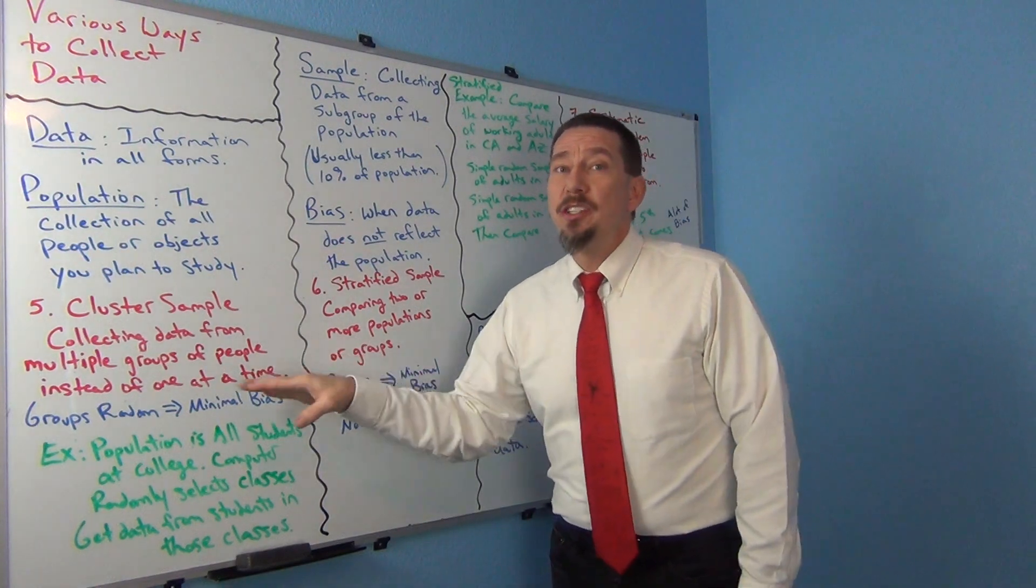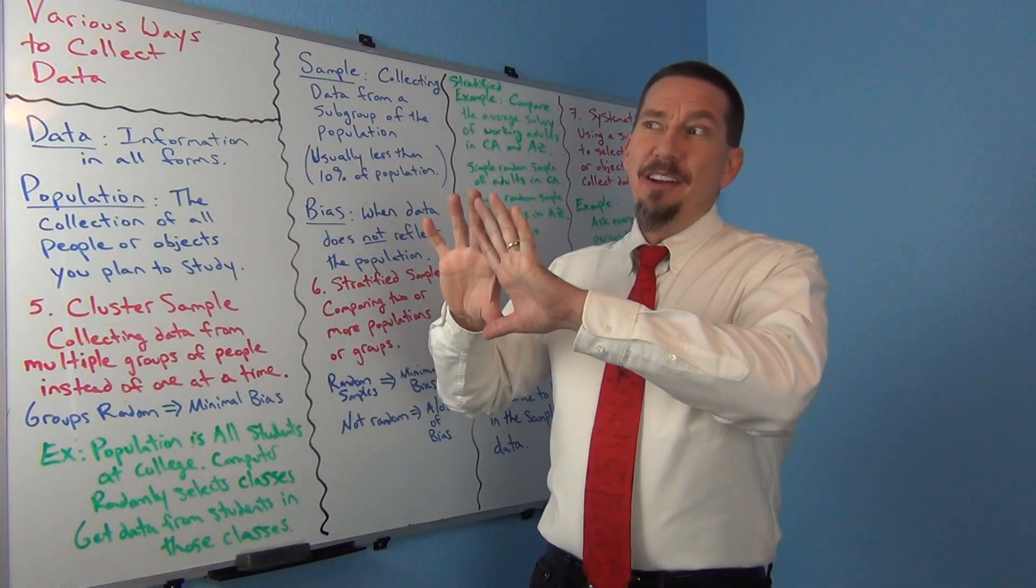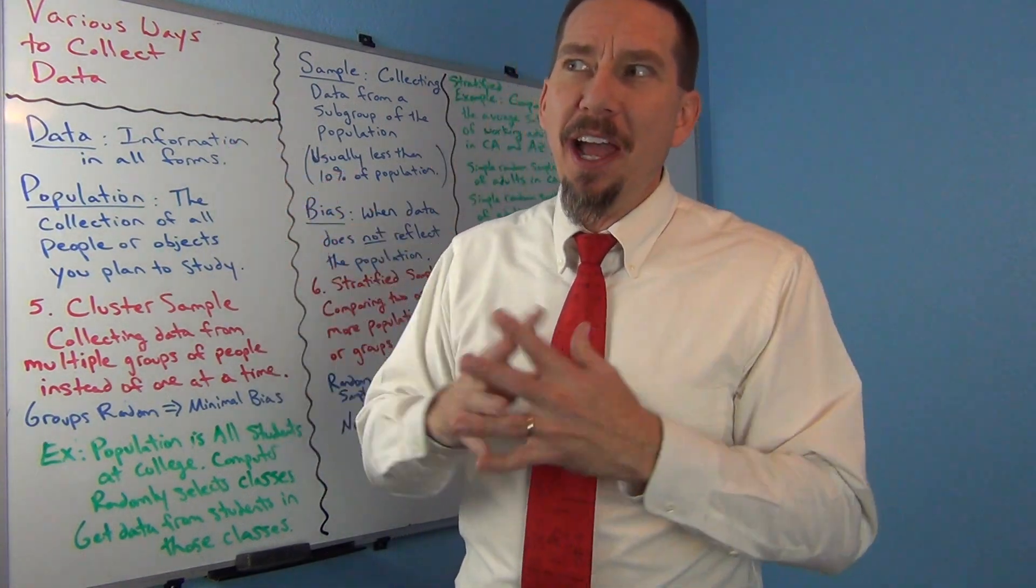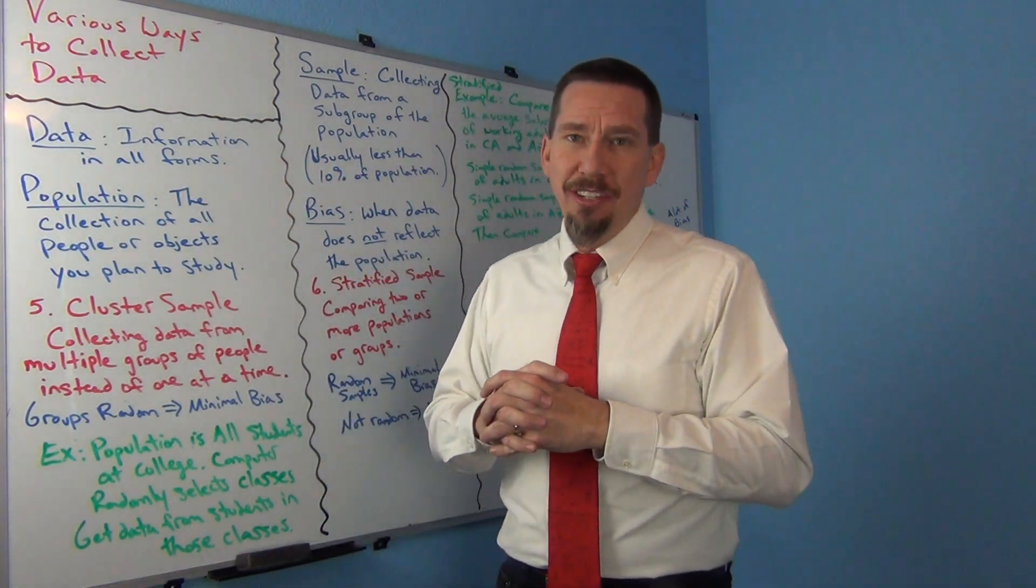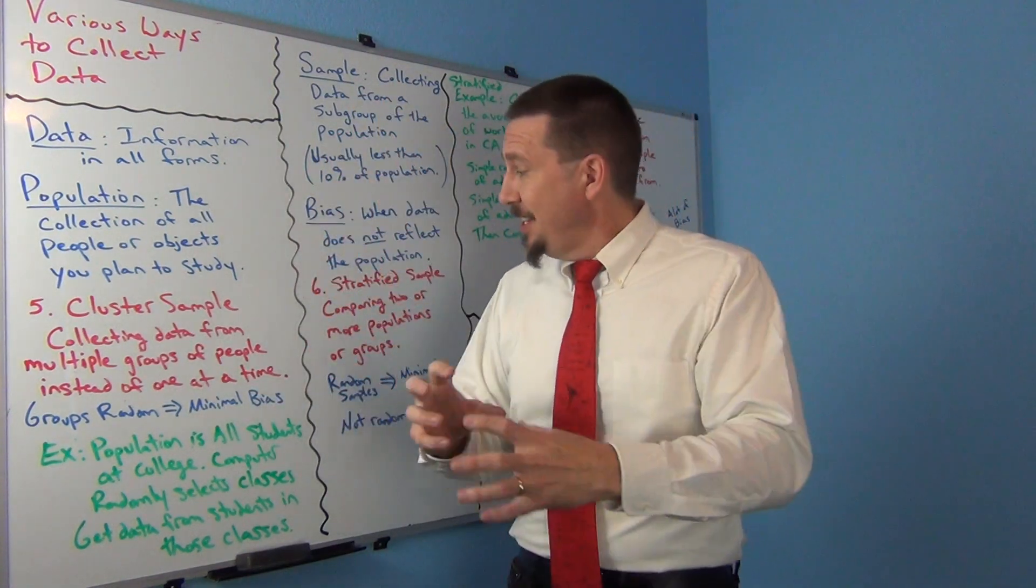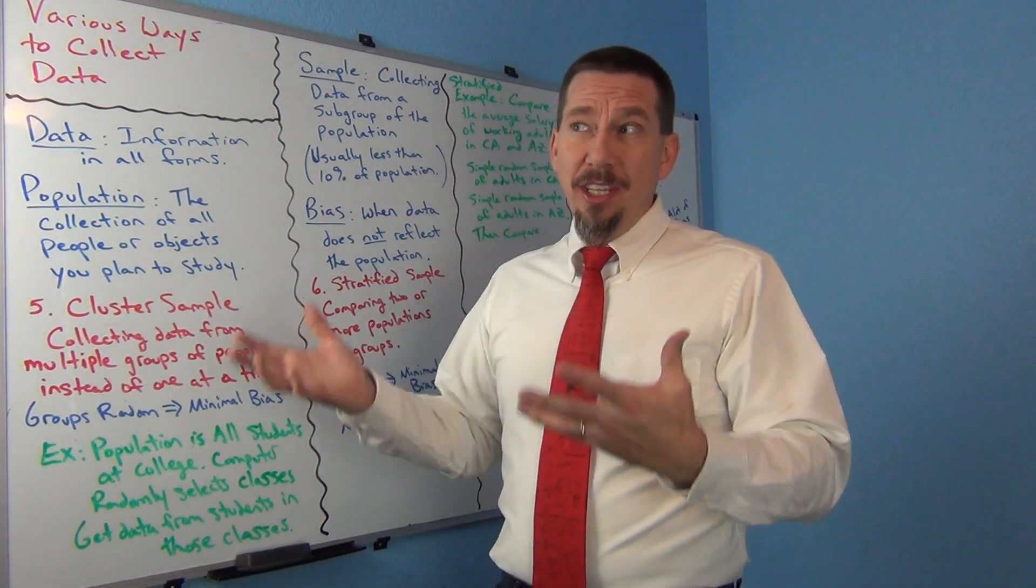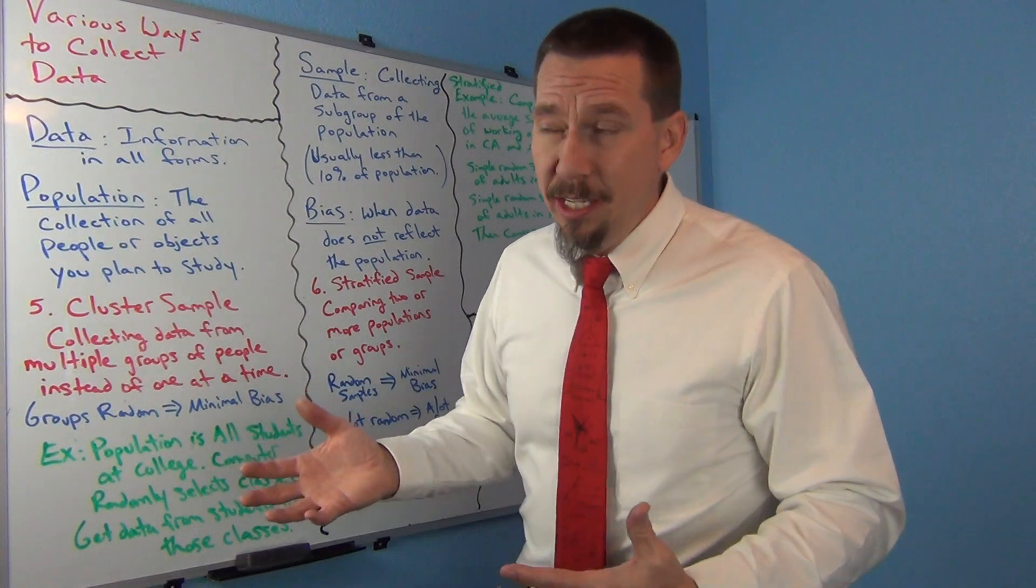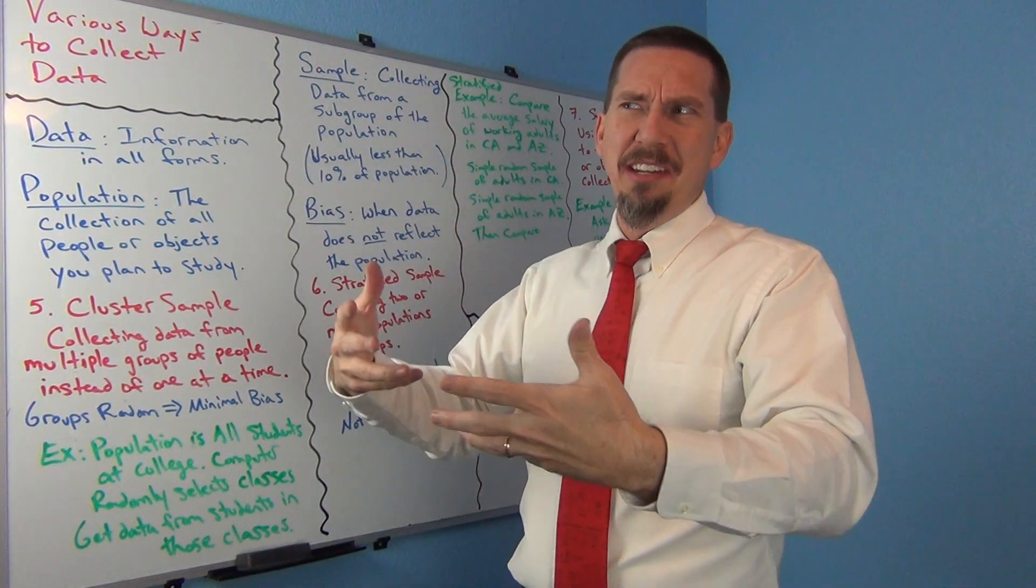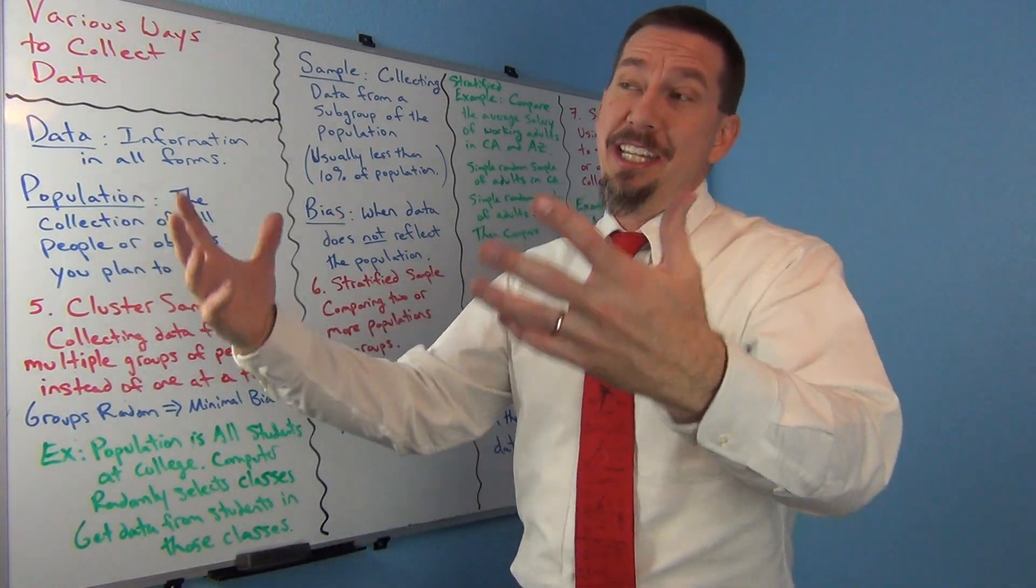Now what if I didn't choose the groups randomly? What if instead of me picking classes randomly with a computer, what if I just selected the five or six classes that I teach? Well it's still clustering, I'm still getting data from groups of students, but it wouldn't be very good. I've now not every student at the college has a chance of being chosen. And I've almost kind of took clustering and convenience and kind of smashed them together. I've done something very convenient for me. It's very easy for me to get data from students that I actually teach.